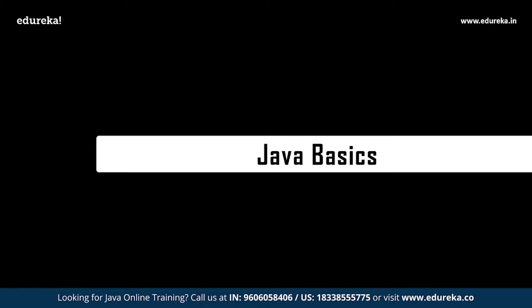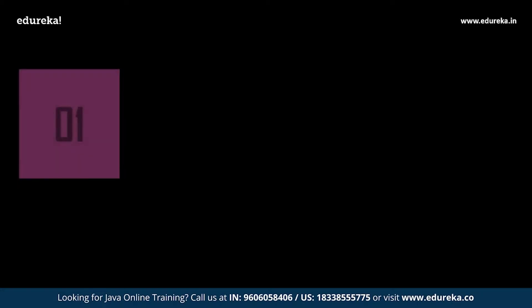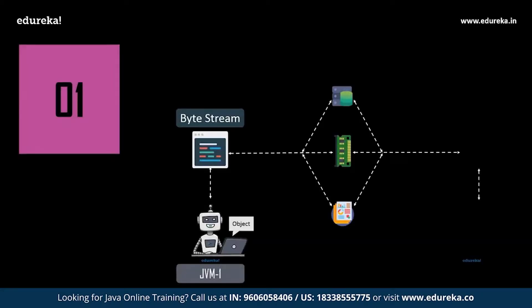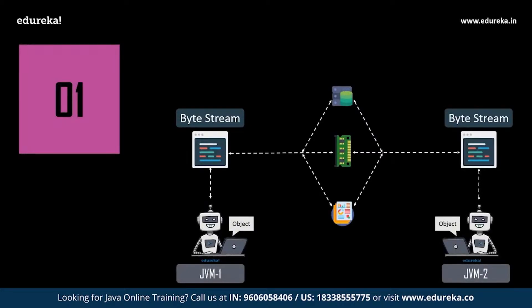Now let's quickly begin our first topic: the basics for Java. First you need to understand how Java behaves — how it communicates with the end user, its compiler, its interpreter, the JVM, and its terminology. When a Java developer writes code, it is first converted into byte code by the Java compiler. This byte code is then transferred to the JVM — the Java Virtual Machine — where the code is interpreted and the relevant output gets generated.